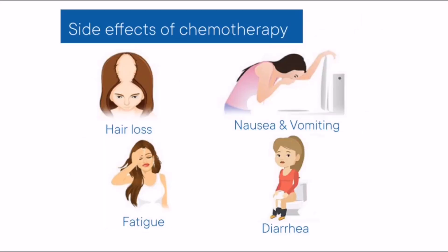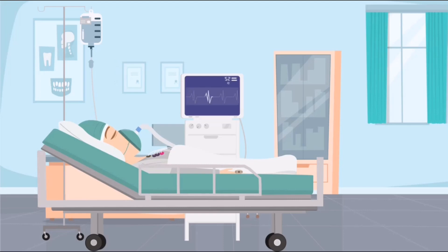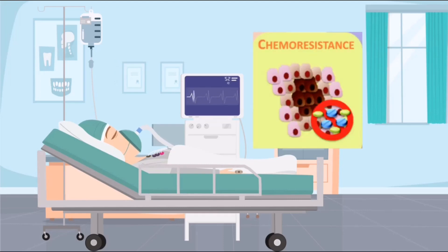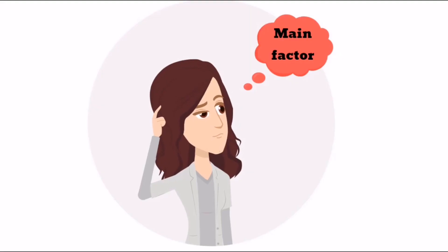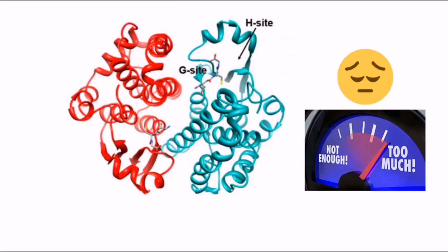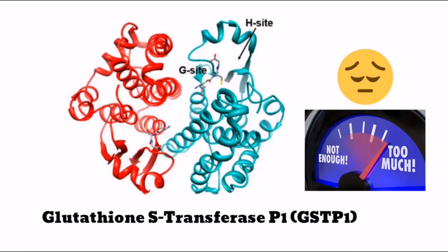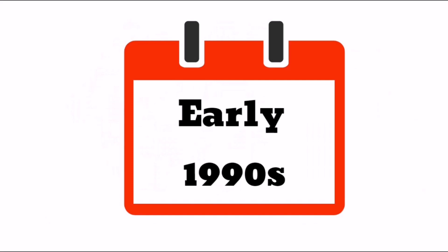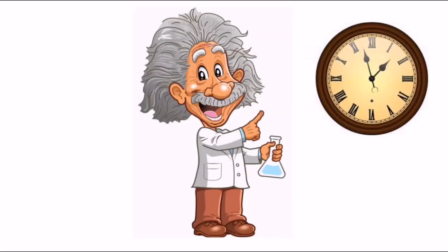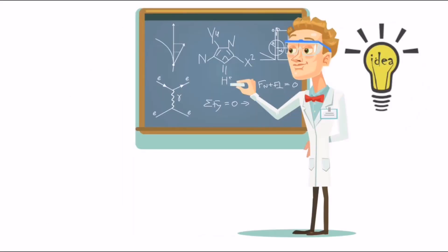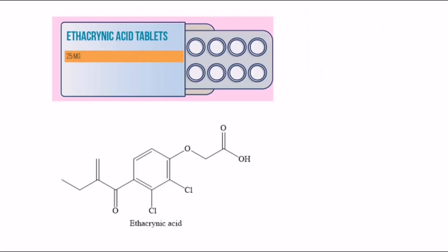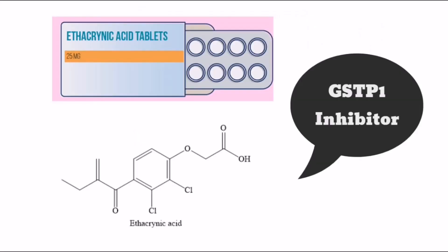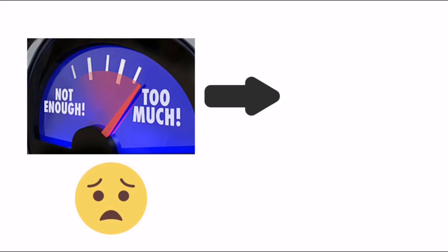Yet some cancer patients do experience chemo resistance, where their chemotherapy treatment is not effective or working as it should be. The main factor is due to overexpression of Glutathione S-Transferase P1, GSTP1, protein or gene. In the early 1990s, past researchers had started to conduct numerous studies and came up with etracrynic acid as a GSTP1 inhibitor for the purpose of regulating GSTP1 levels into normal range.